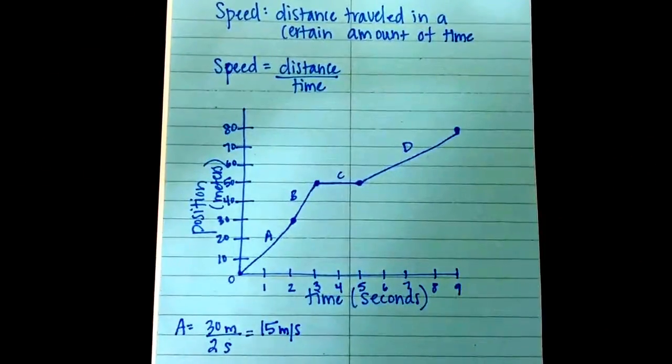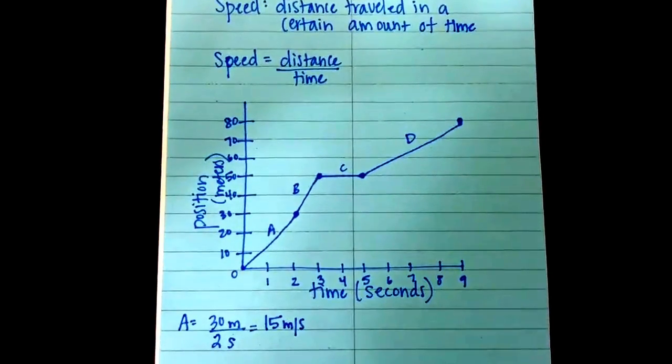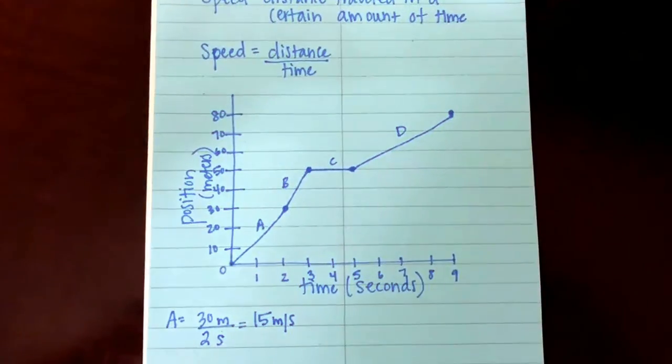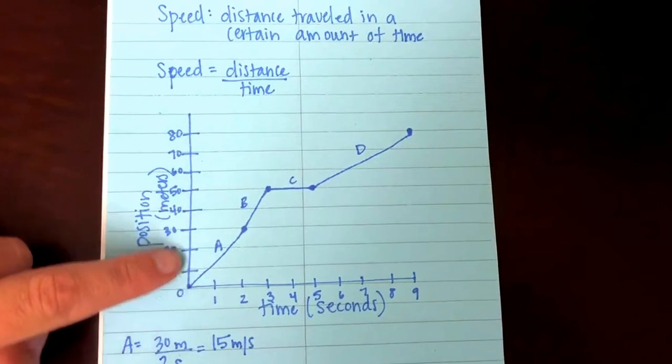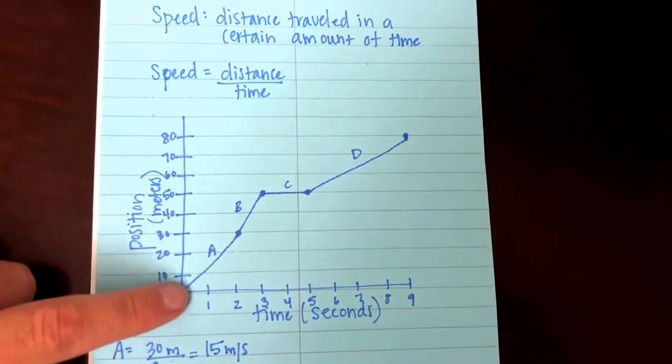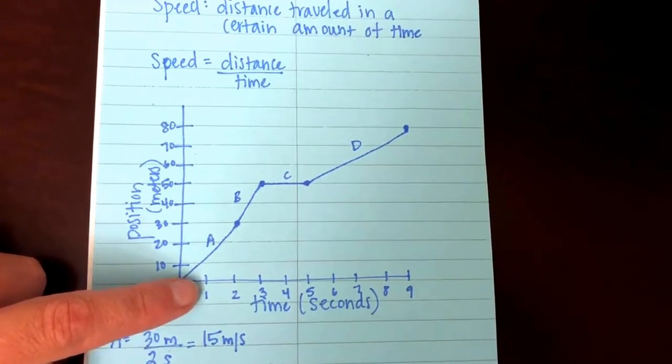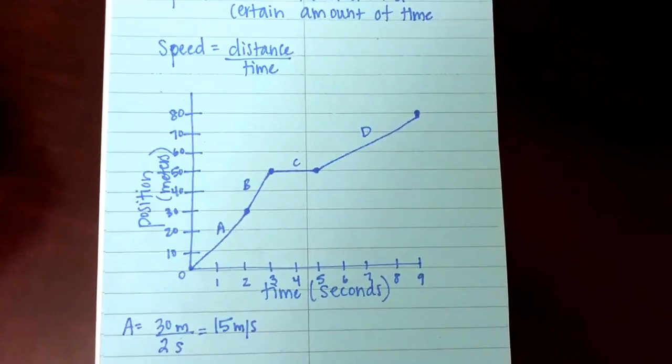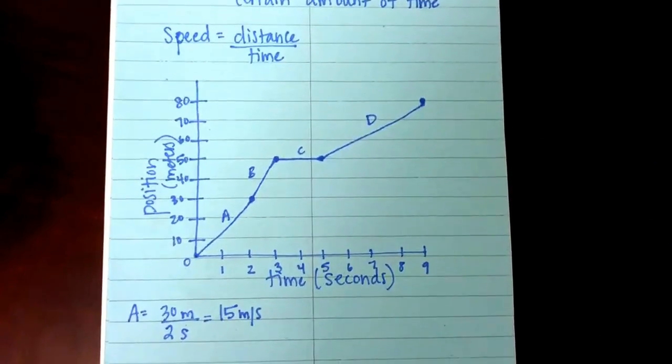You'll see here in letter A that I have created my formula down below. In line segment A they traveled 30 meters - they started at zero and ended at 30. So they traveled a total of 30 meters, that's the distance, and it took two seconds to travel that distance. I divided 30 meters by 2 seconds and got 15 meters per second.